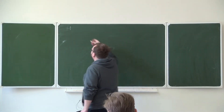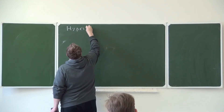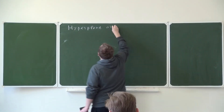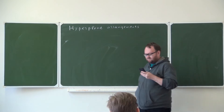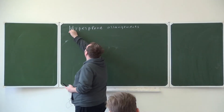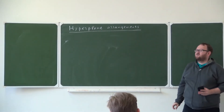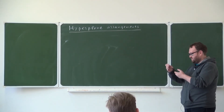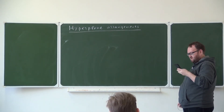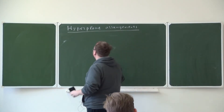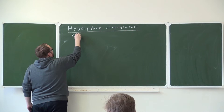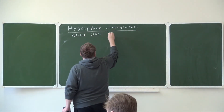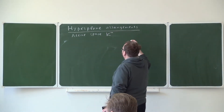Today's topic is hyperplane arrangements — a geometric application of the theory of Möbius functions, which we developed in the previous part. We consider the affine space, the affine n-dimensional space k^n, where k is a field.